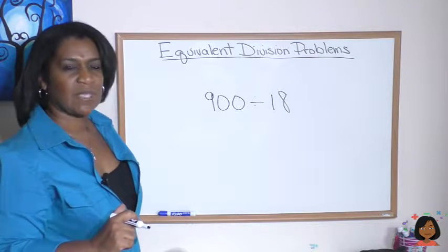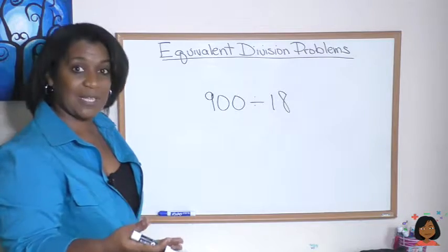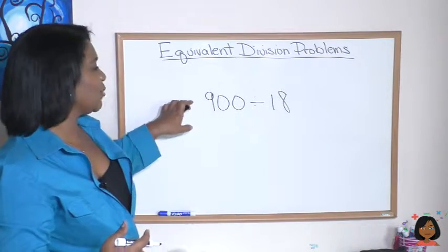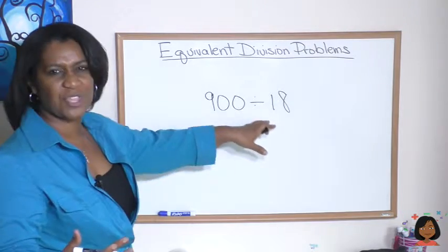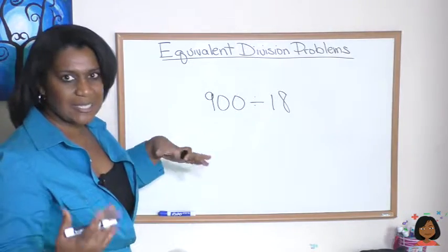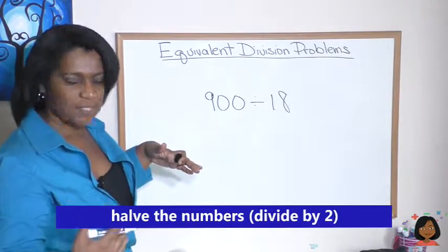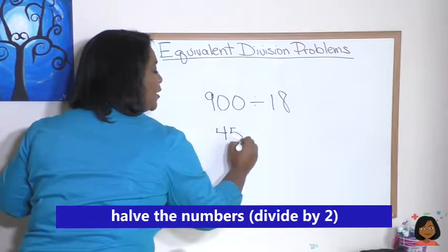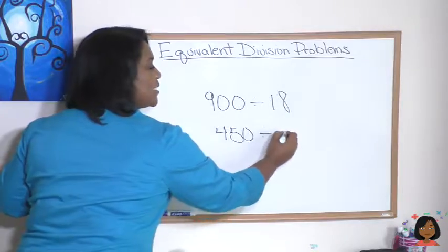Well, the system is you either look to double it, or look to half it. If we doubled it, this would be 1,800 and 36. Still not that easy to do. What if we halved it? Well, half of 900 is 450, and half of 18 is 9.